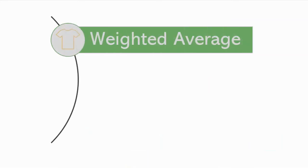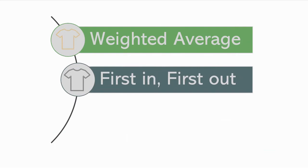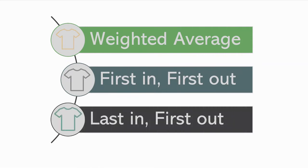In the world of accounting, they give us some options. Option one is using a method called the weighted average method for inventory. Option two is the first-in first-out method, also known as FIFO. And option three is last-in first-out, known as the LIFO method. I'm going to walk through each of these methods, how they're calculated, and then how that impacts our journal entries, gross profit, and inventory on the balance sheet for a company.